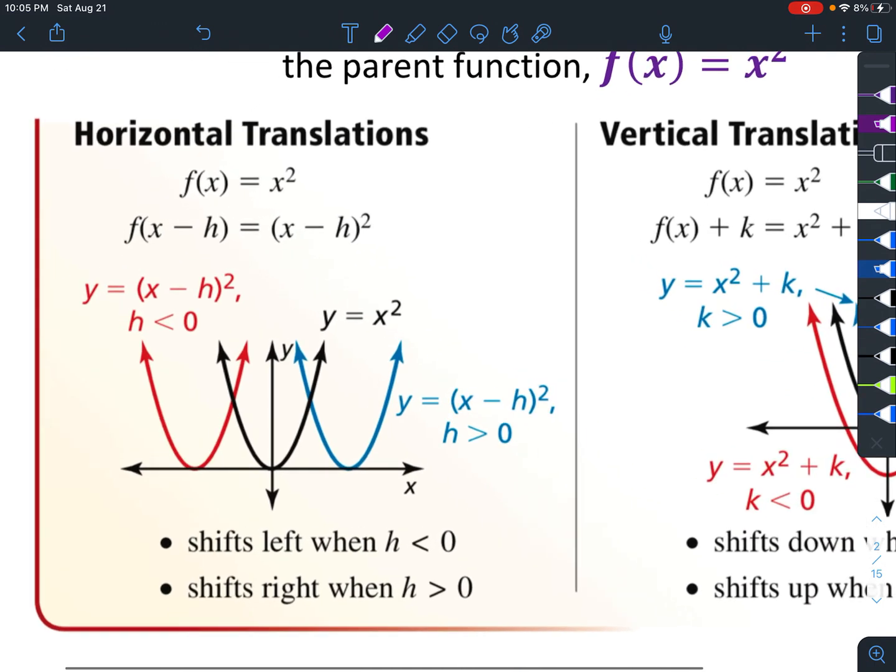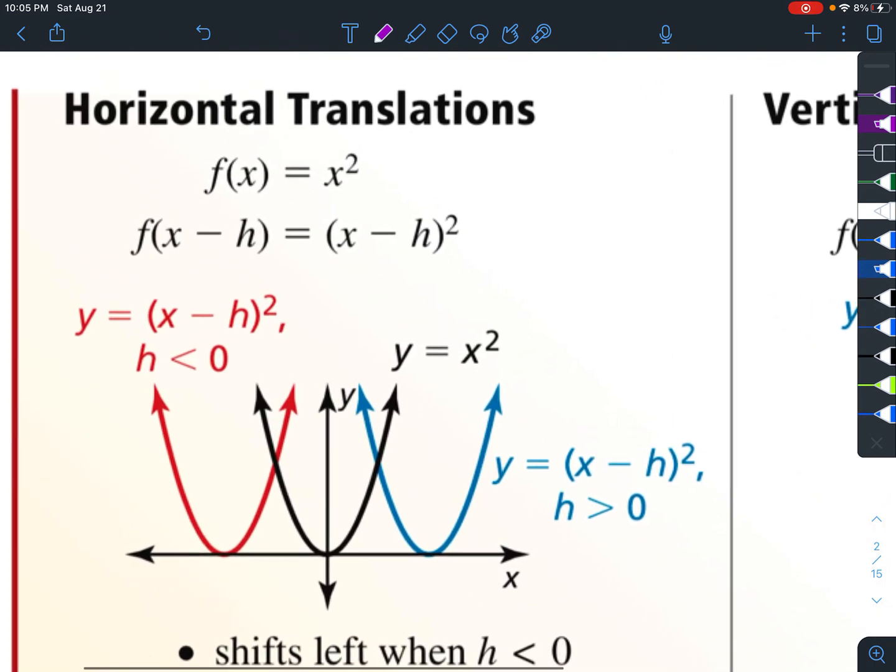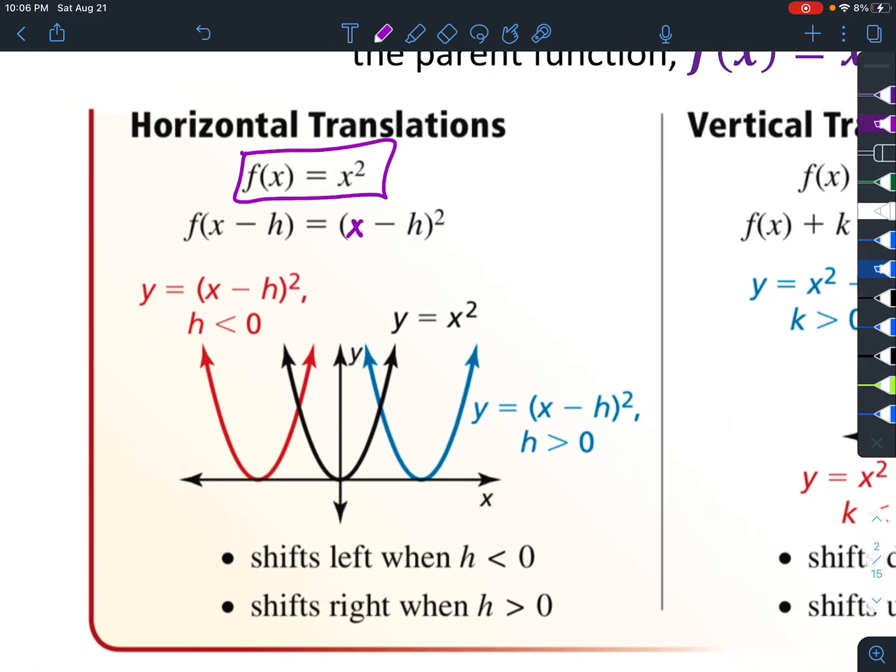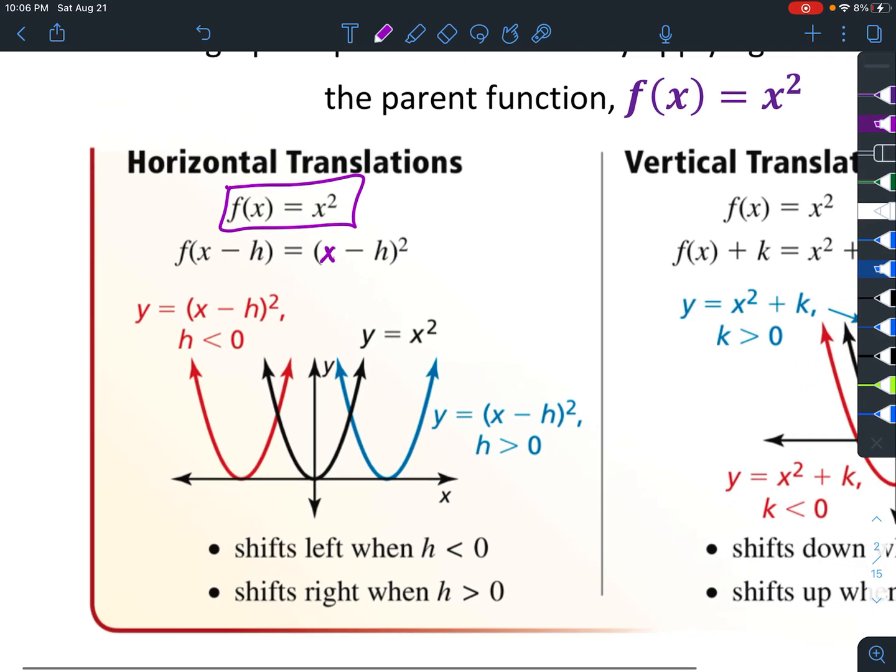Let's just look at what happens in general. Here's the parent graph. When you subtract h from x in the parentheses and that whole thing is squared, it actually moves in the opposite direction. So if it says minus h, it actually slides over to the right. And if it says plus h, then it slides over to the left.